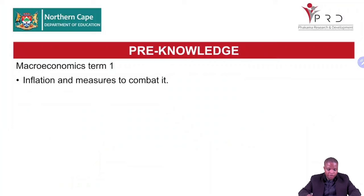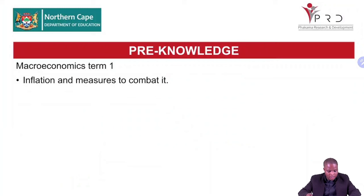So the pre-knowledge: let us already understand what inflation is and measures taken to combat inflation. This we learned in macroeconomics term one. When we did the business cycle, there was an essay called the new economic paradigm. We looked at ways to combat inflation when the economy is overheating — monetary and fiscal policies were discussed under inflation and ways to combat inflation. So that is the knowledge the grade 12 learner already has.